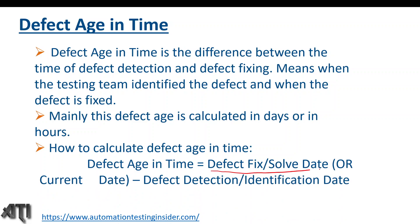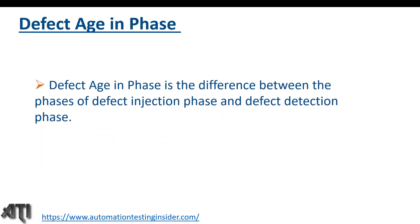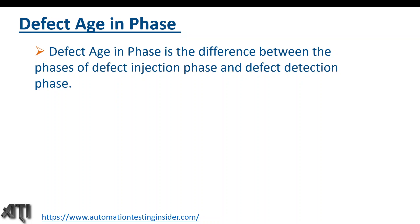The formula for defect age in time is: Defect Age = Defect Fix Date (or current date if still in open state) minus Defect Detection Date (or identification date — the date on which we found the defect).